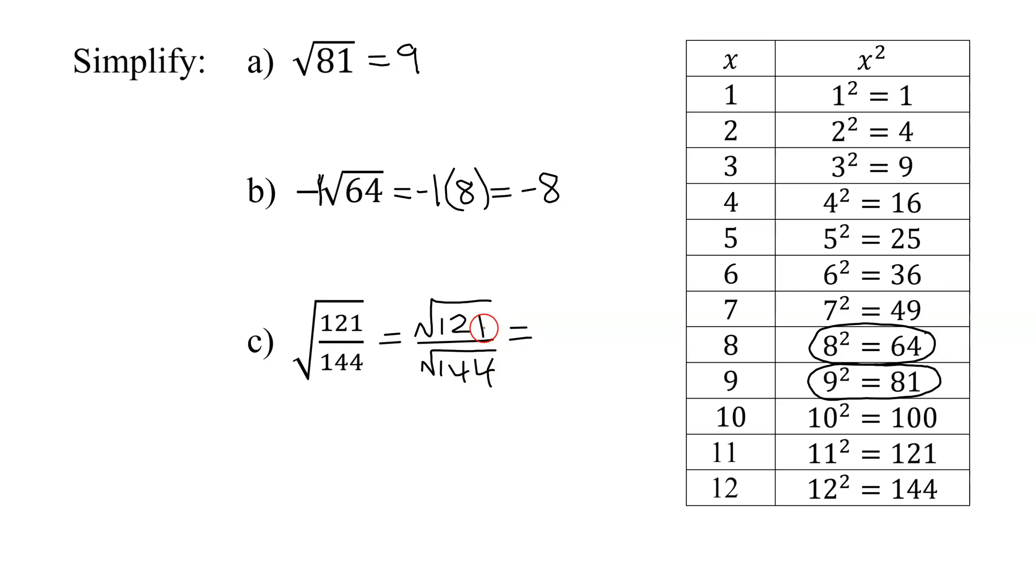Is 121 a perfect square? Yes. It's 11 squared. So the square root of 121 is 11 divided by the square root of 144. 144 is 12 squared. So the square root of 144 is 12. So my answer is 11 twelfths.